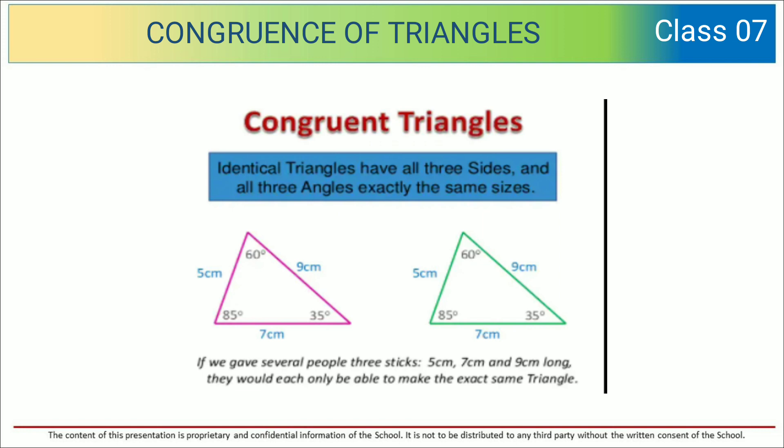So if we give several people three sticks, five centimeters, seven centimeters, and nine centimeters long, they would each only be able to make the exact same triangle.